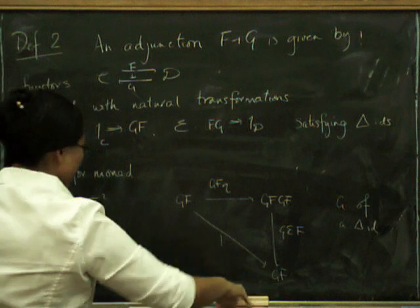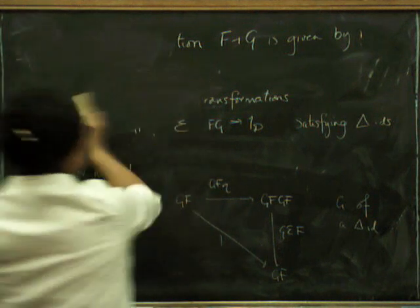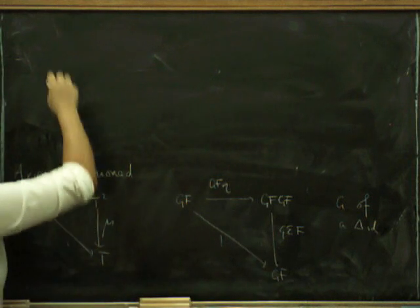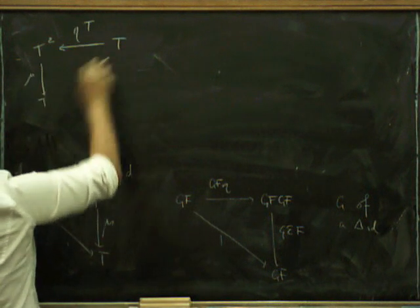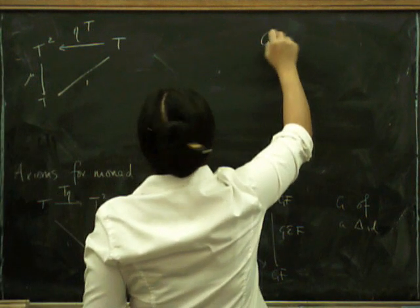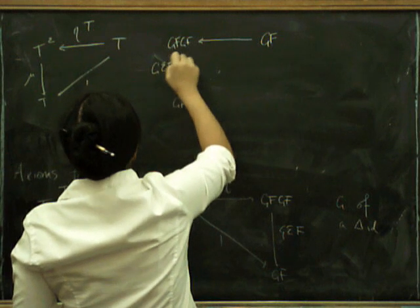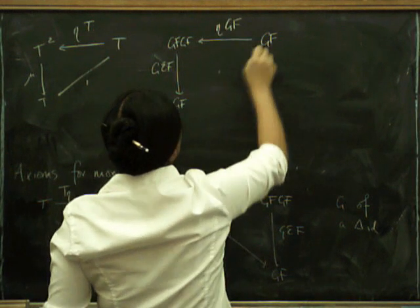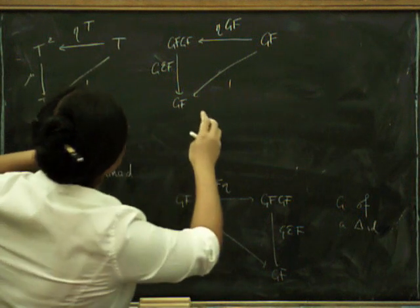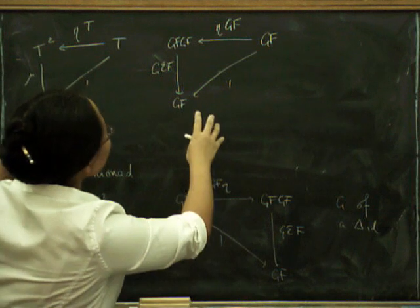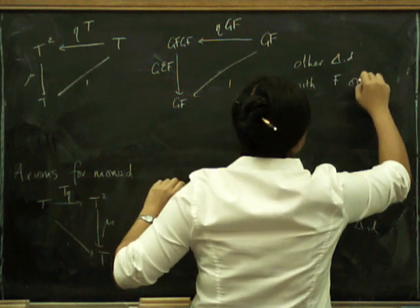There's the other axiom as well. The right-hand side triangular axiom says that if you put eta on the left and apply mu, you should also get the identity. Writing this out with T as GF, we get GFGF, and after applying eta GF composed with G epsilon F, we again use the triangle identity — this time it's the other triangle identity with F on the right-hand side. So the second monad unit axiom is verified.